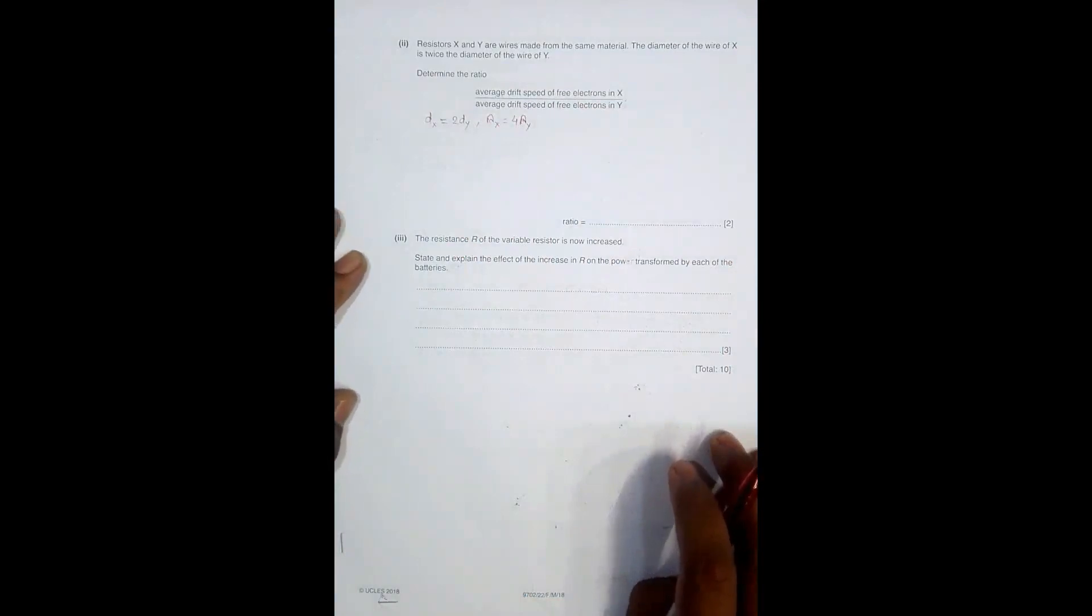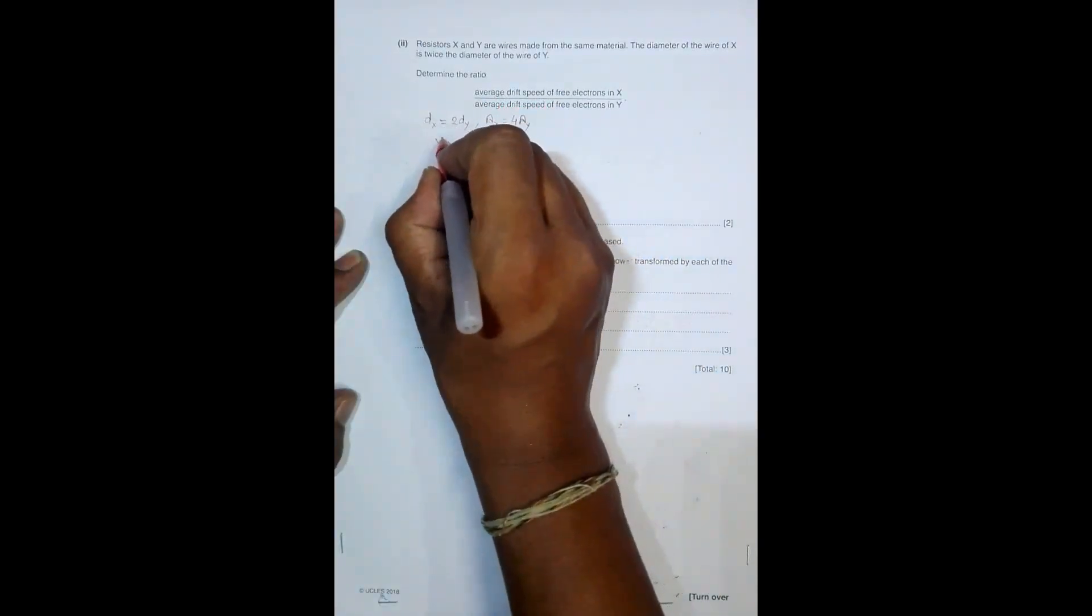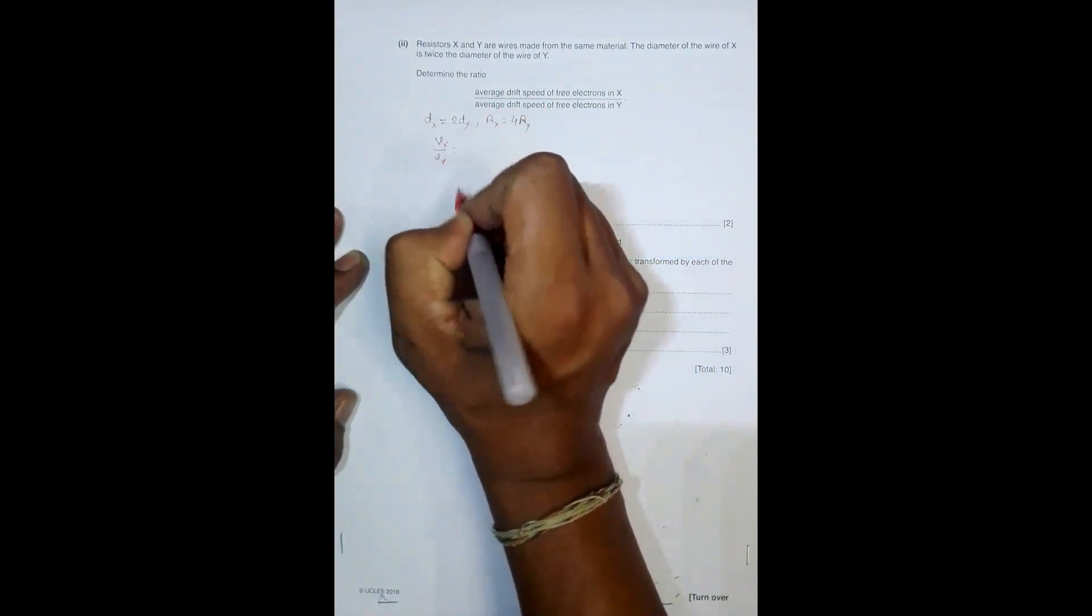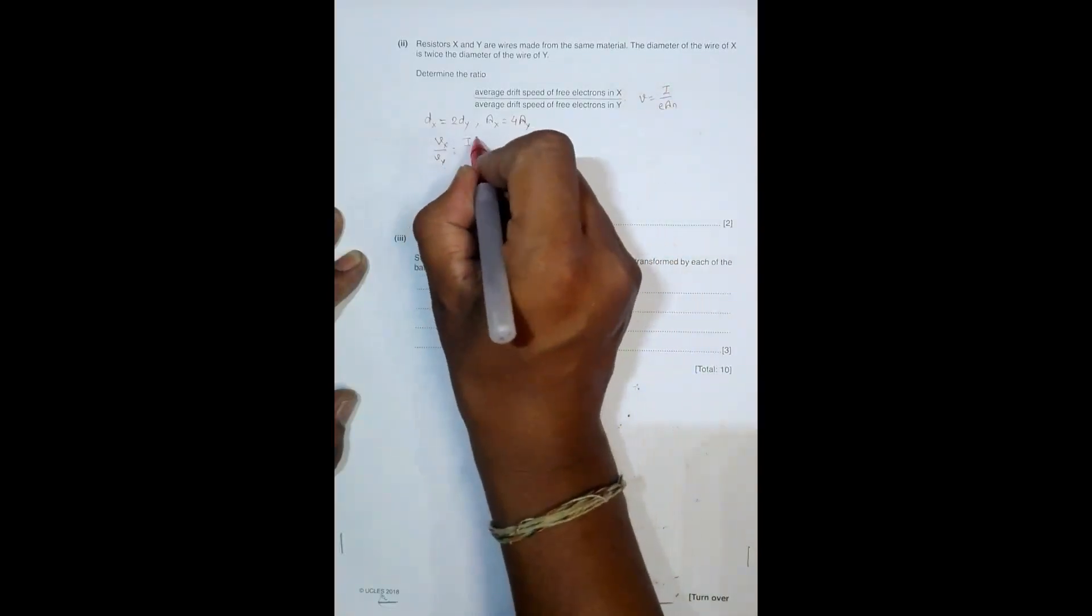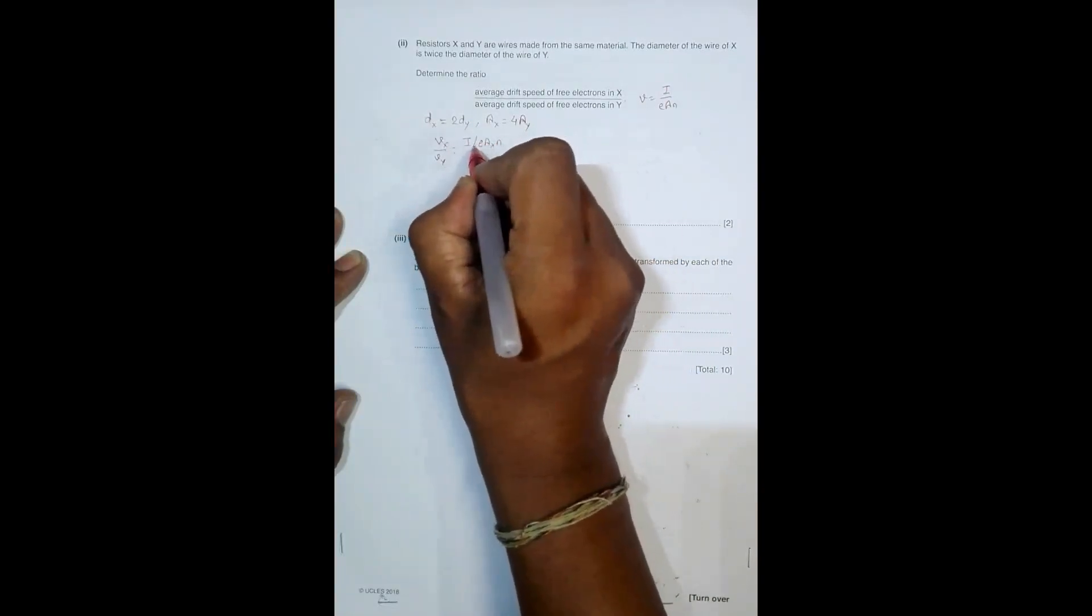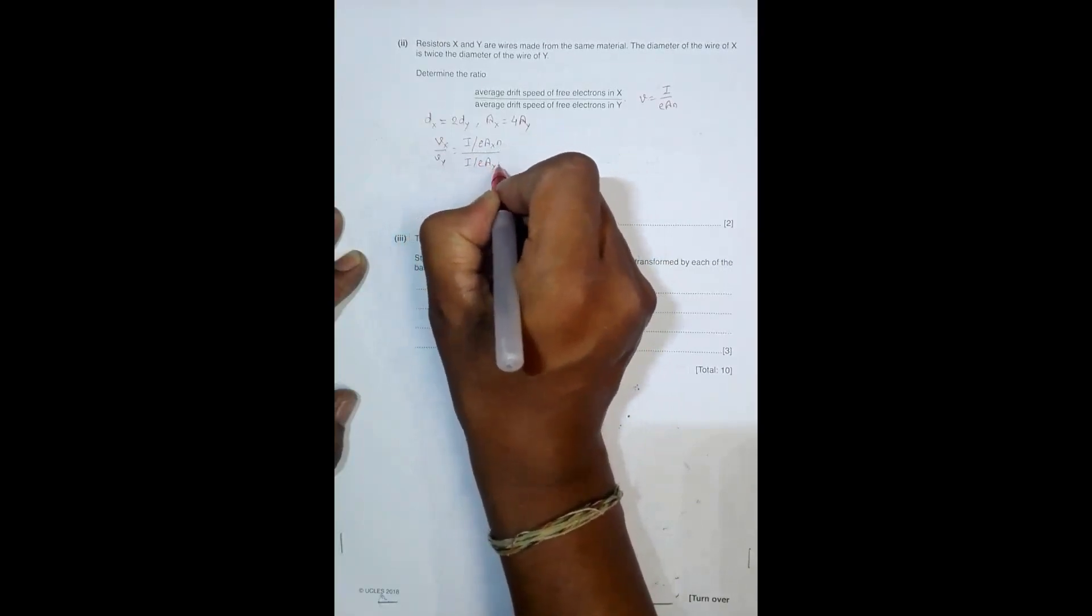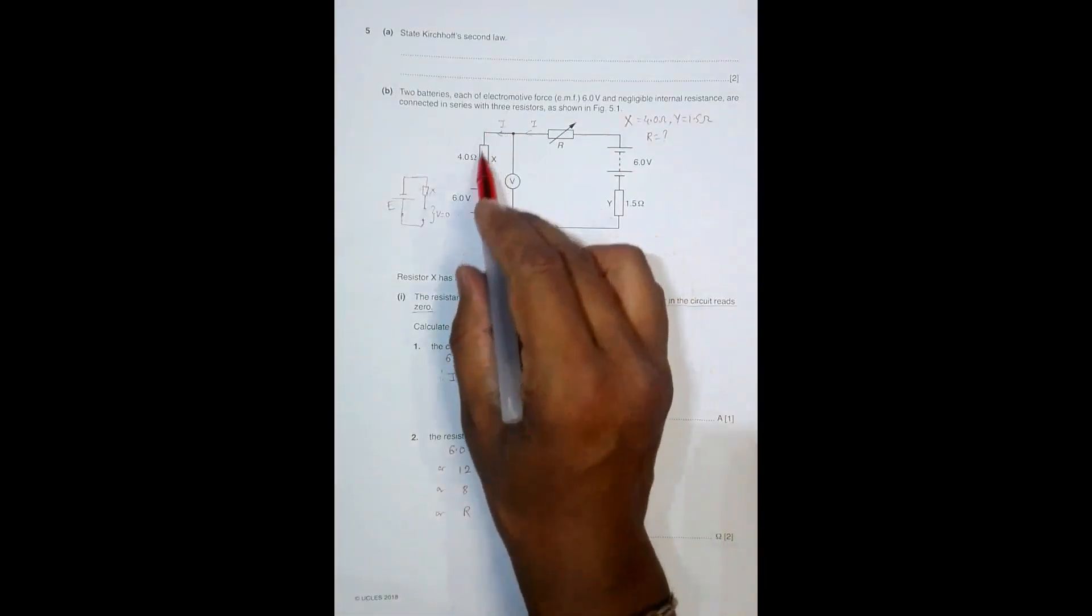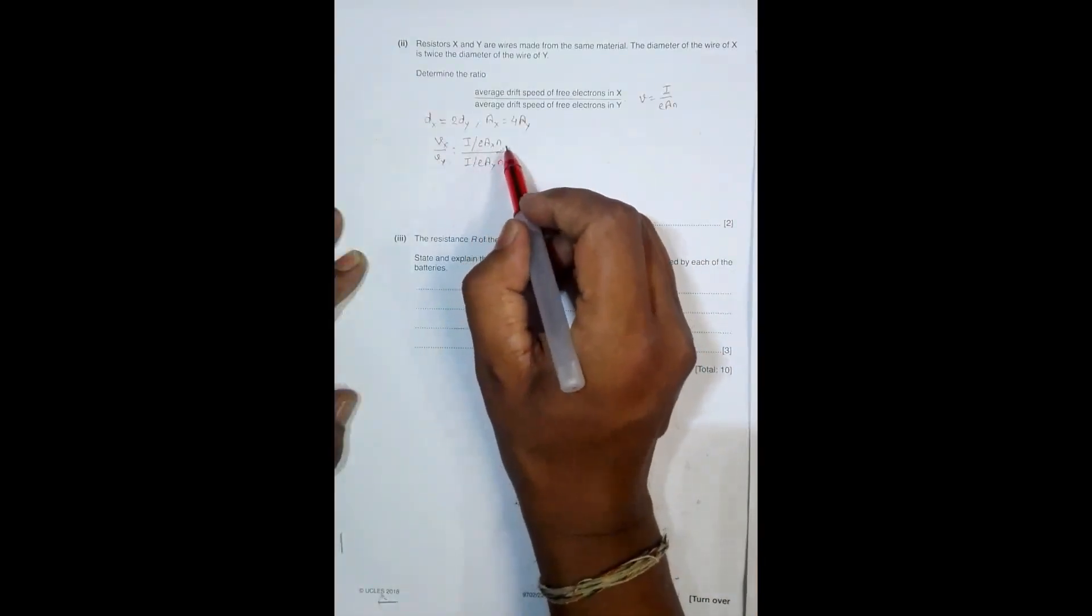Now we have to find the average drift velocity ratio. V_X by V_Y equals... Using the formula V equals I divided by nAe, we get (I by nAe for X) divided by (I by nAe for Y). The current is the same across all resistors, electron charge is a universal constant.